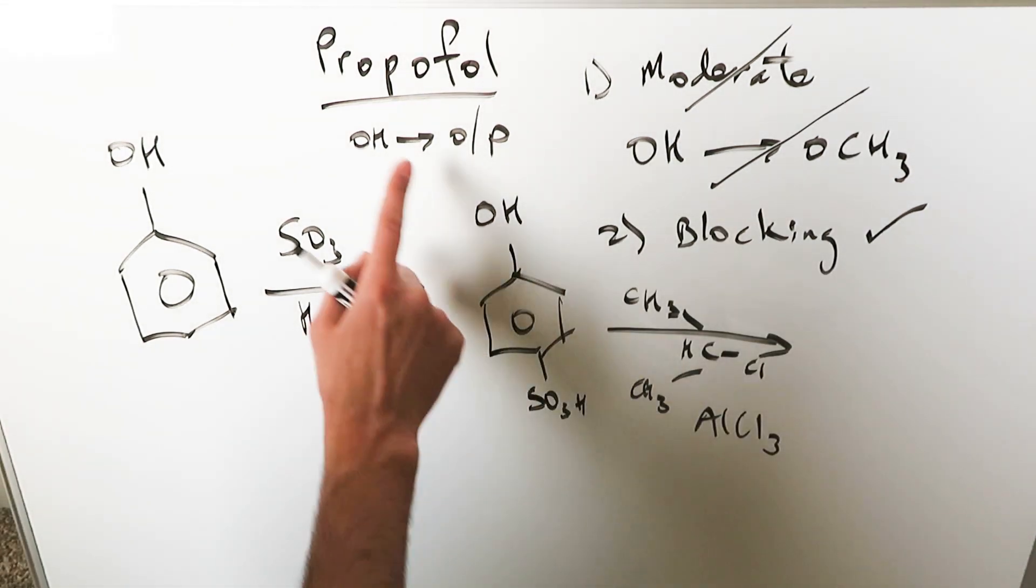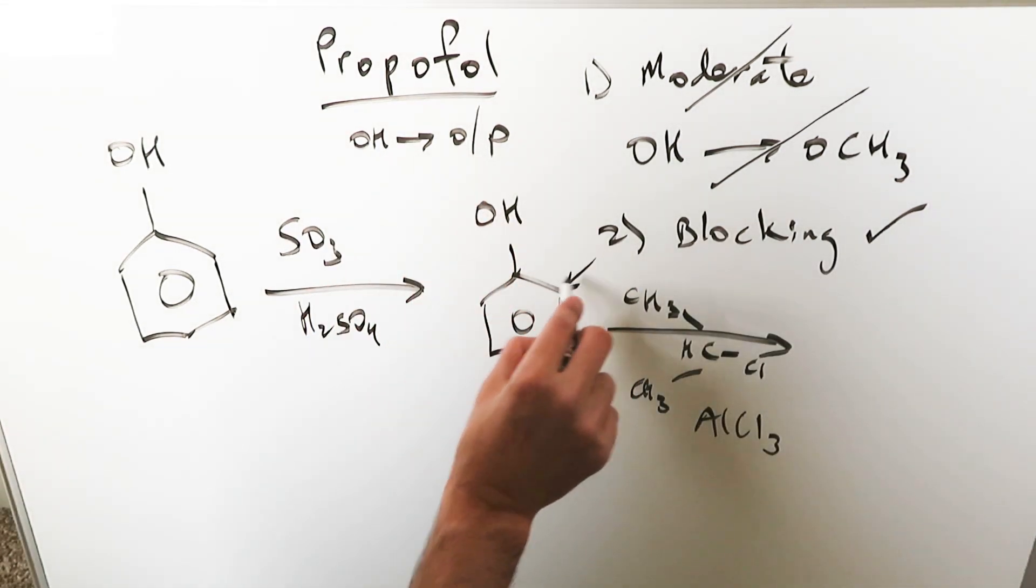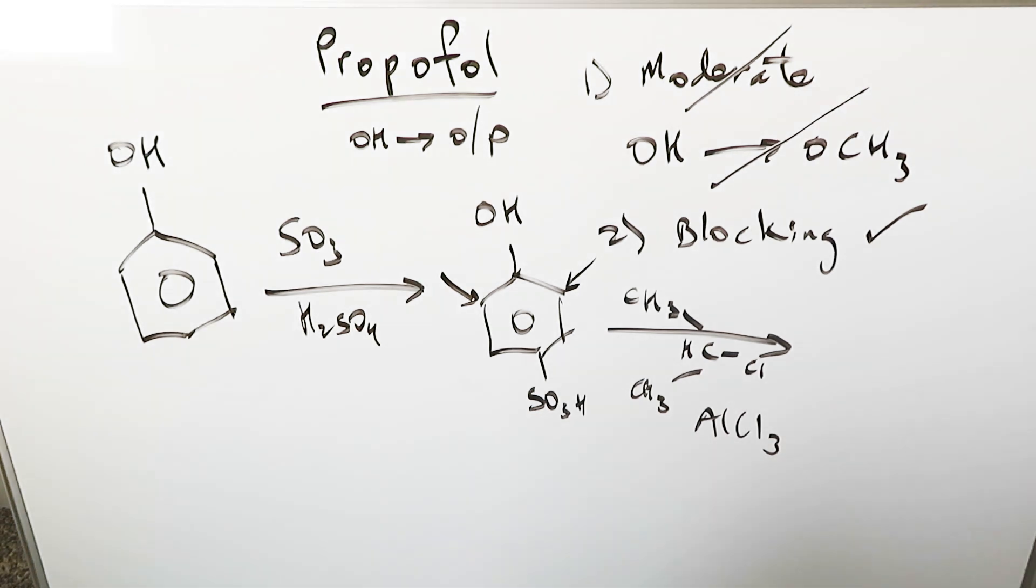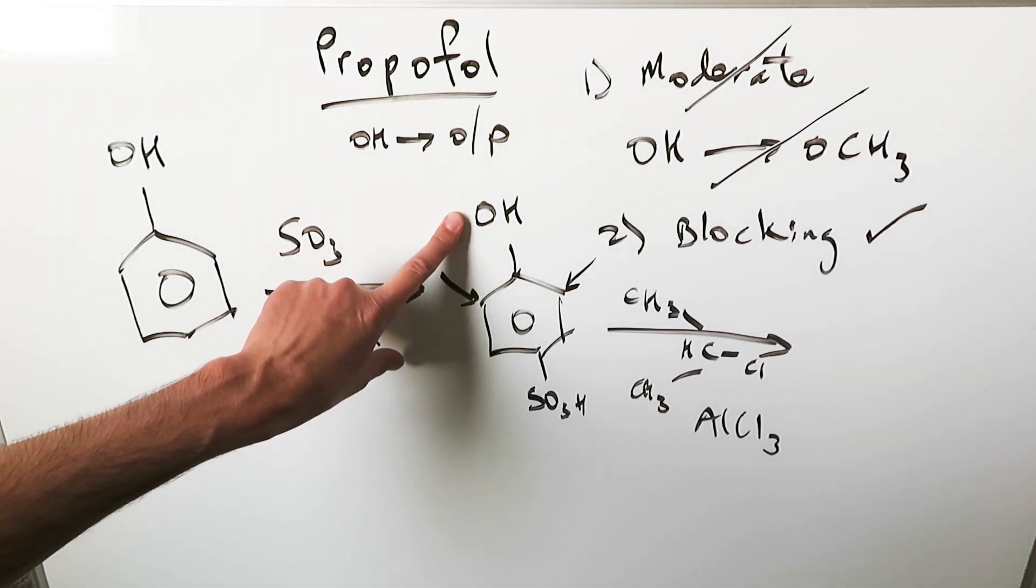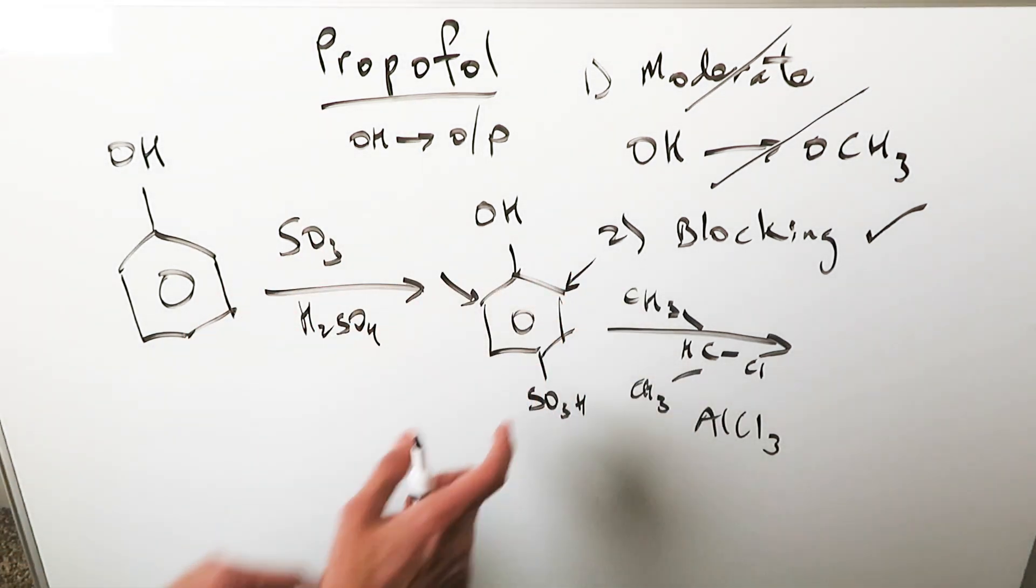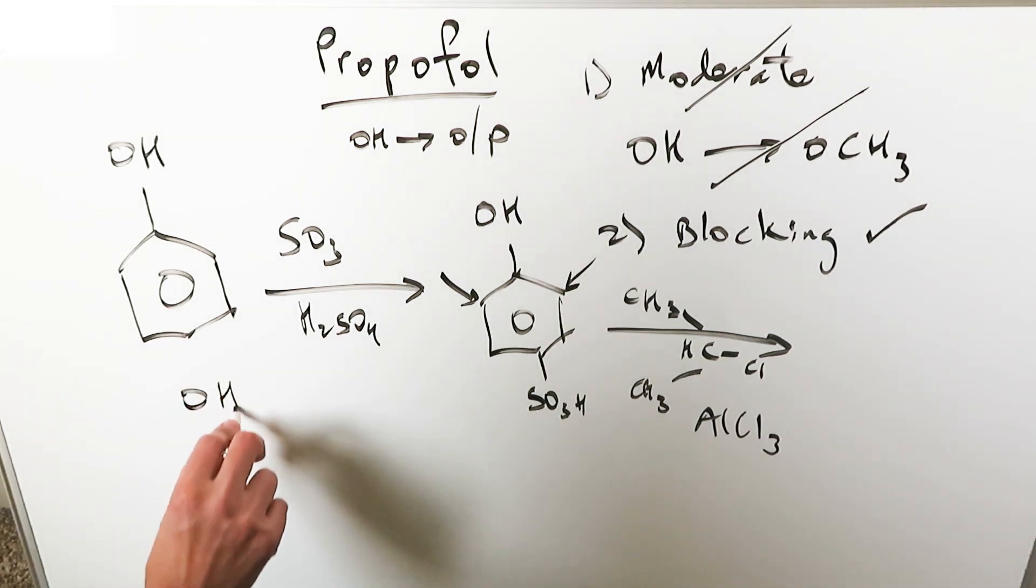Because the para position is blocked and this is ortho para director, it has to add here and it has to add here. It has to add in both areas because we never moderated it. It's still very activating and will add in both areas. What I will end up seeing is this.